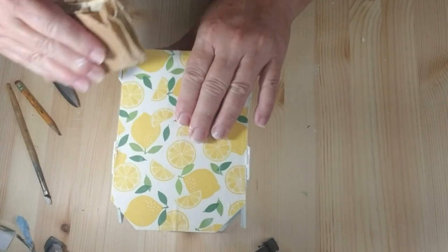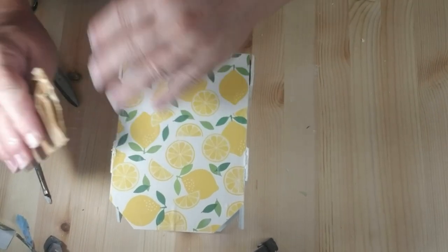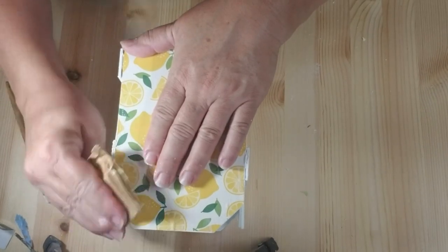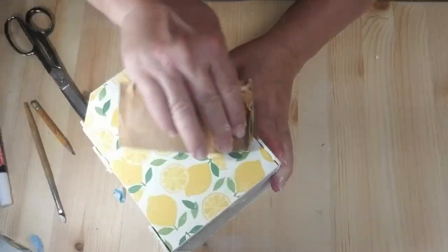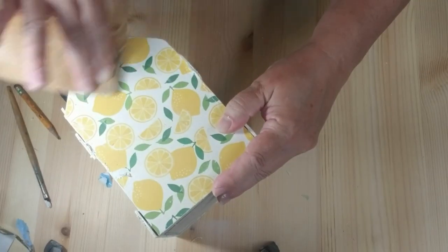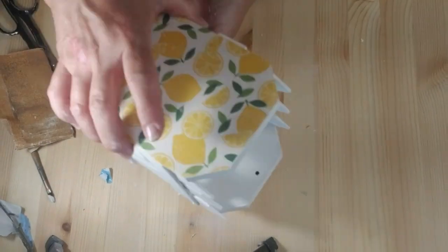I'm just going to take some sandpaper and gently sand off the edges where there was a little bit of the paper hanging over. And the other thing I'm going to do is just take the sandpaper lightly across the paper just to give it a more worn and weathered look.